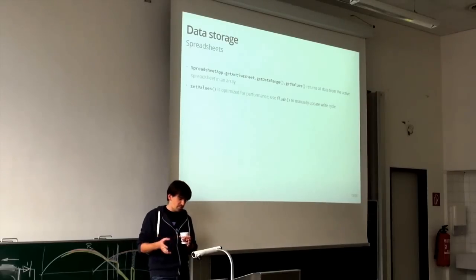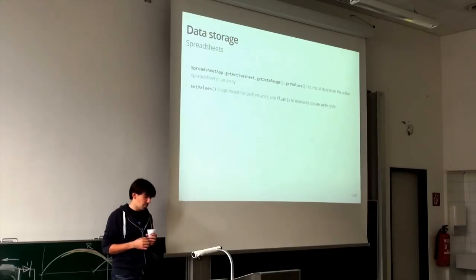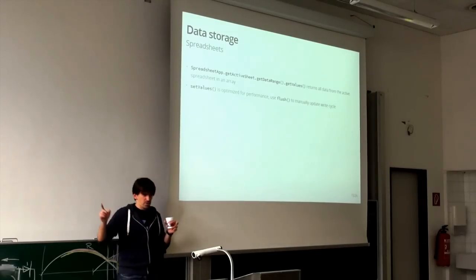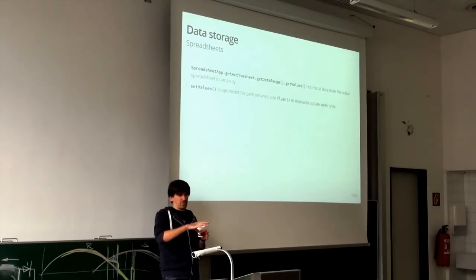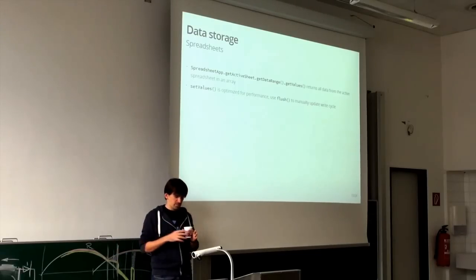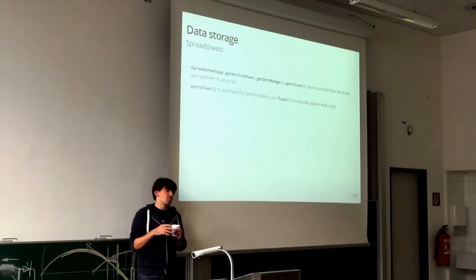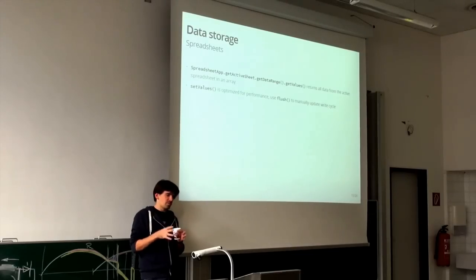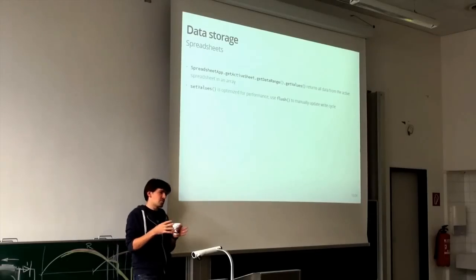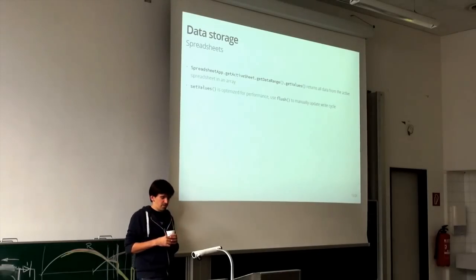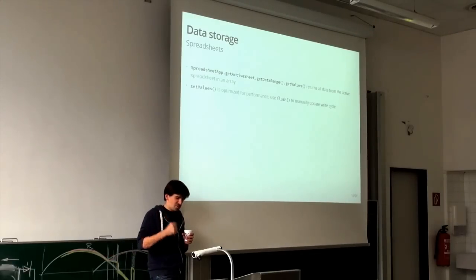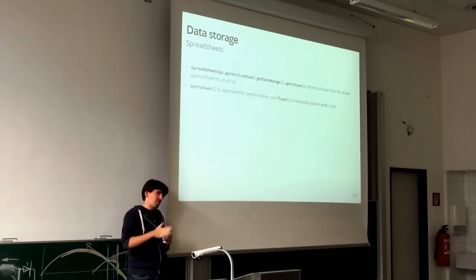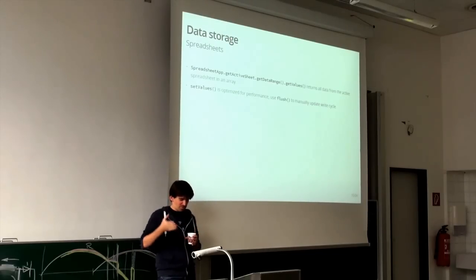When you store data in a spreadsheet, you invoke the Spreadsheet App service, get the active sheet or open a sheet by ID (which is the long string in the URL of a Google Doc), then select a range and insert a certain array inside the spreadsheet. When you write data to a spreadsheet, it's not written instantly — it's optimized for performance. So sometimes you've written data but don't see it in the spreadsheet. There is a function called flush which flushes the data pipeline and writes data you've already written, breaking the optimization cycle inside the spreadsheet.